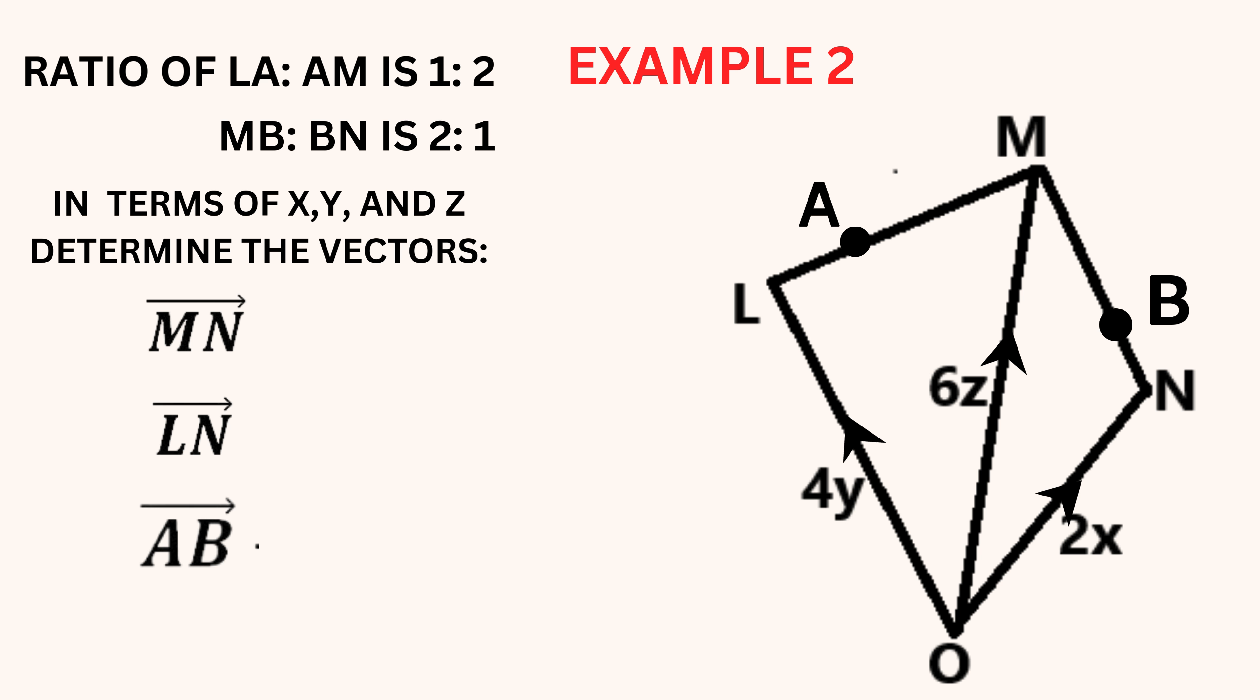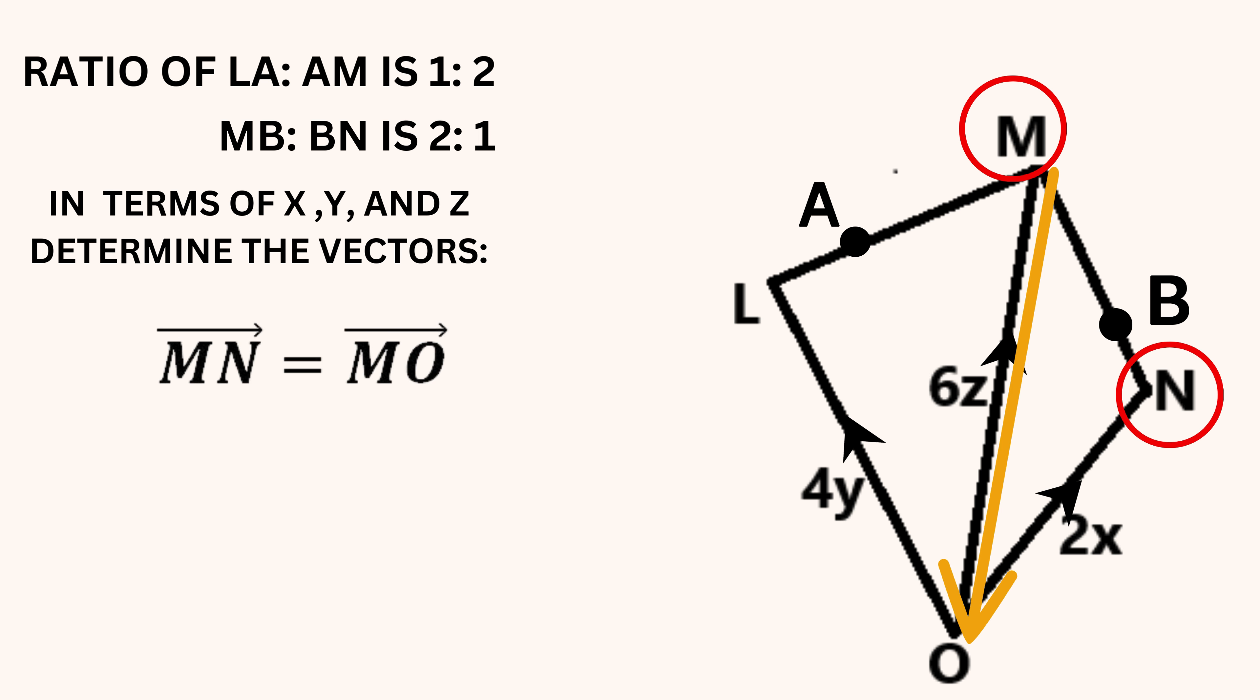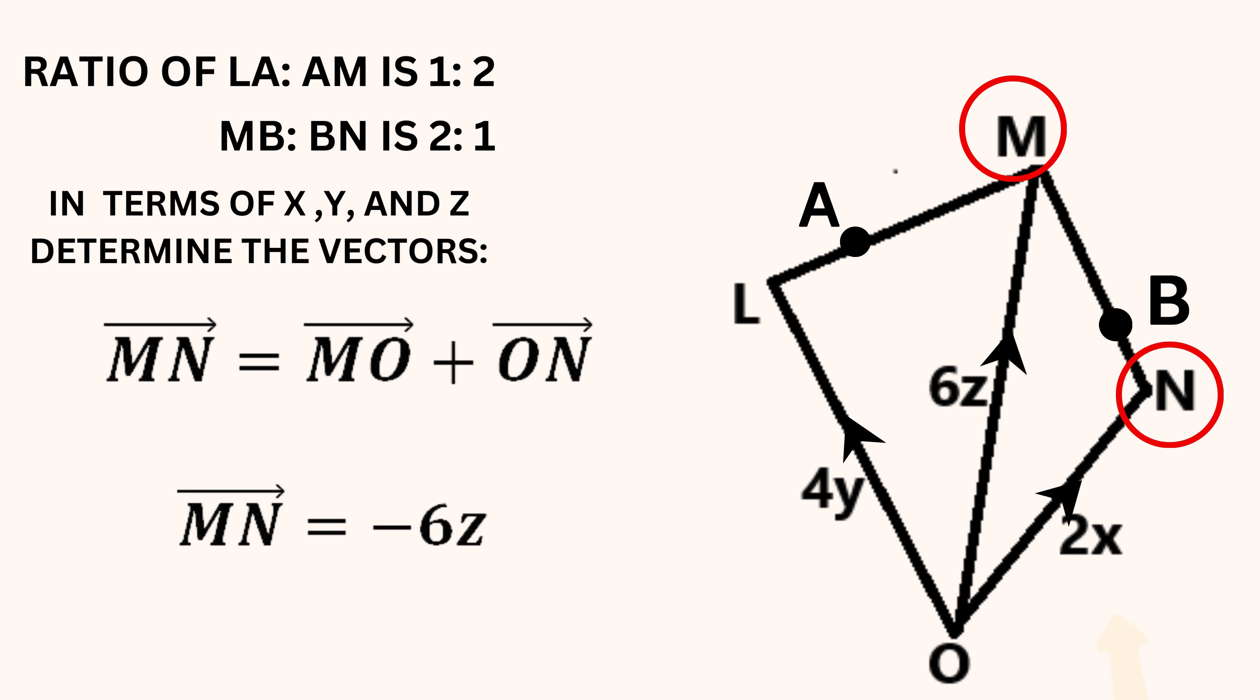In this first example, we need to find three vectors in terms of X and Y. Let's begin with the vector MN. How can I get from the point M to point N? We can move from point M to point O and then from point O to point N. Hence, we get the equation now being shown on the screen. Vector OM is 6Z, which means that vector MO is negative 6Z since the direction changed. The vector ON is 2X. Hence our solution, vector MN is negative 6Z plus 2X.